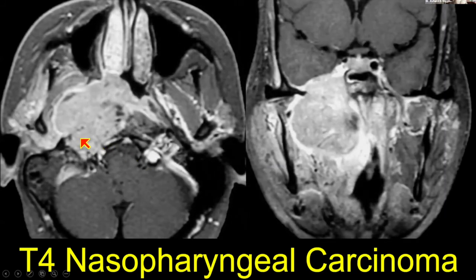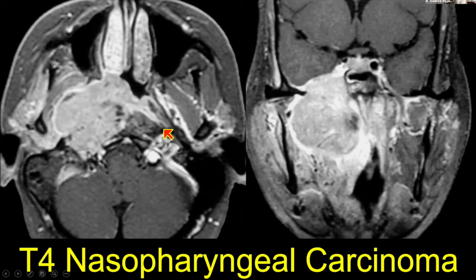If the tumor goes up intracranially, that's automatically T4. We can see a very big foramen ovale on that side — tumor crawling up V3 through ovale to get to the trigeminal cistern or Meckel's cave, and from there it could go forward to the cavernous sinus or back towards the pons and brainstem. To find V3: find the condylar head, go to the medial part, go one centimeter medial and one centimeter anterior — that's where V3 is at ovale. The nerve should not enhance, though there's often enhancement around it due to the pterygoid venous plexus.